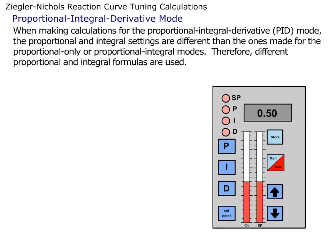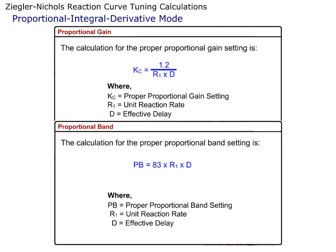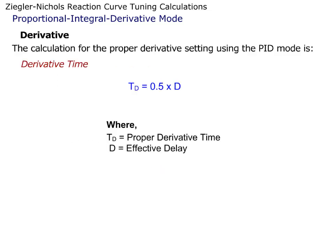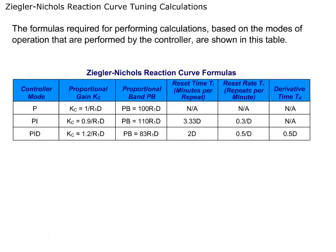When making calculations for the Proportional Integral Derivative, or PID mode, the Proportional and Integral settings are different than the ones made for the Proportional Only or Proportional Integral modes. Therefore, different proportional and integral formulas are used. The formulas for Proportional Gain and Proportional Band settings for the PID mode can be seen here. The Reset Time and Reset Rate formulas while in the PID mode can be seen here. The calculation for the proper derivative setting using the PID mode is seen here. The formulas required for performing calculations based on the modes of operation are shown in this table.